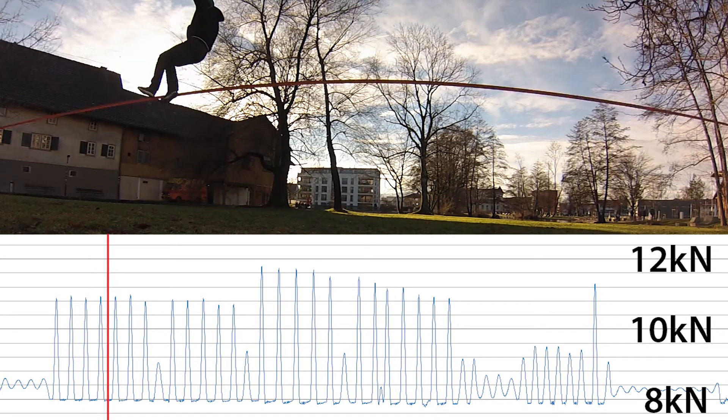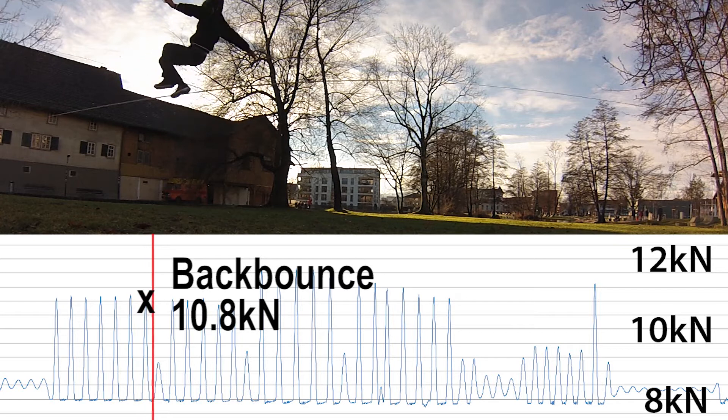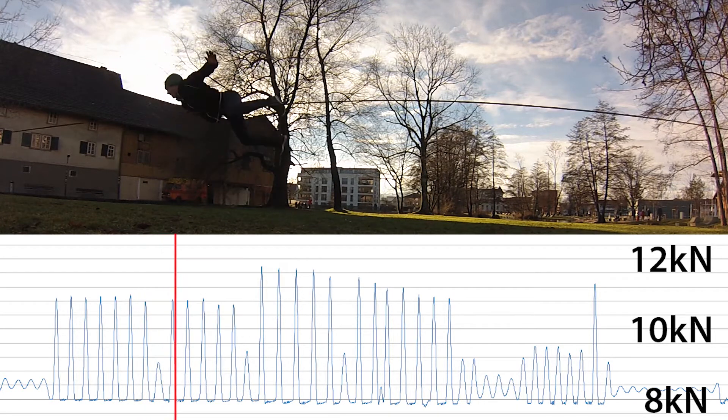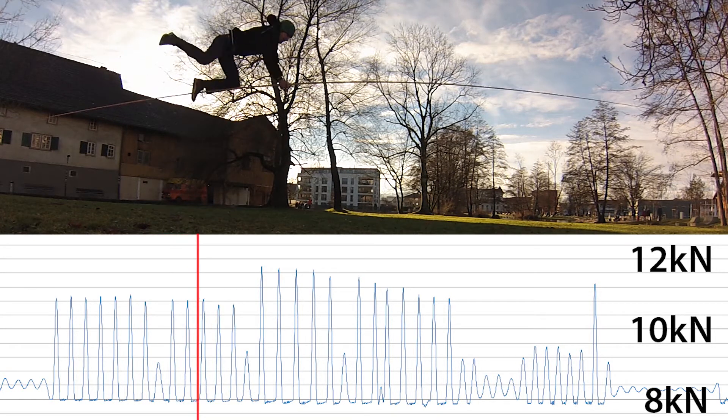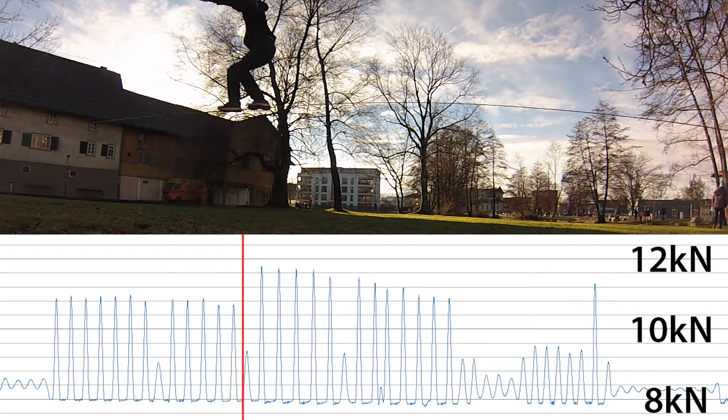In this example, 40 jumps were performed in 50 seconds. If this was calculated up for 1 hour, there would be 3000 jumps and at the same time 3000 force cycles where the force increases from 8 to 12 kilonewton.